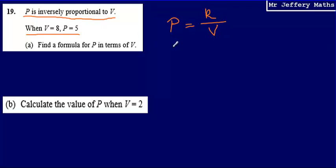So if we know that P is equal to 5, then that means that 5 is equal to K divided by 8, because we're told that when V is equal to 8, P is equal to 5. So this allows us to find that constant, and then we can write that as a formula for P in terms of V.